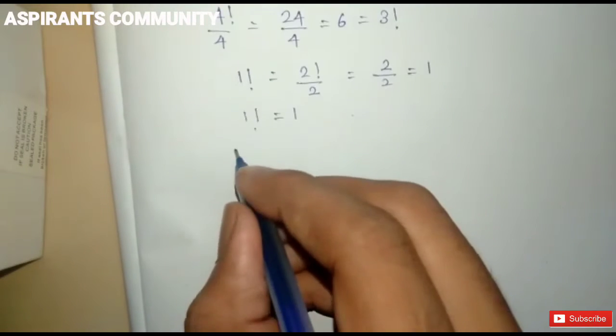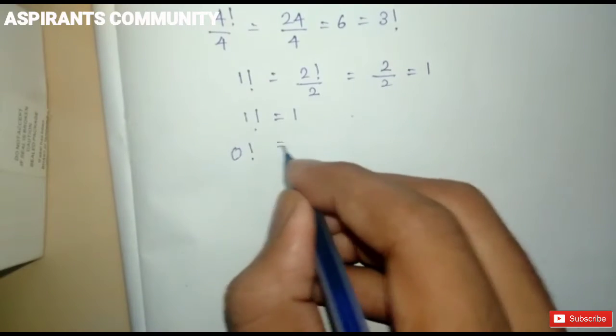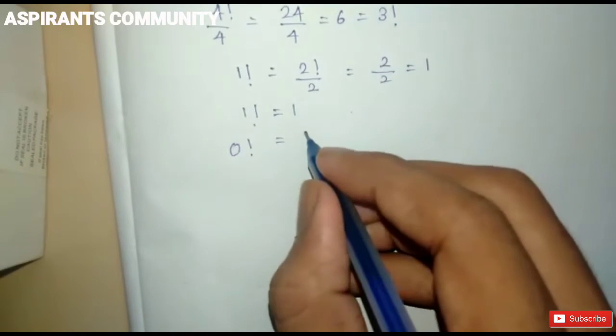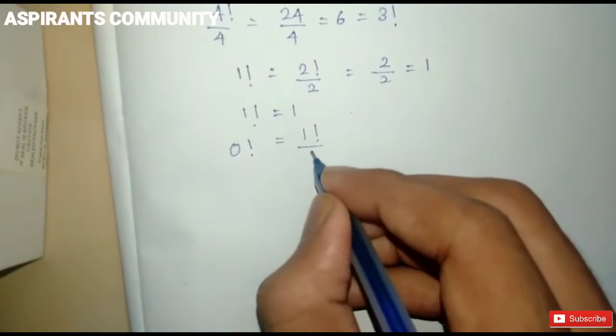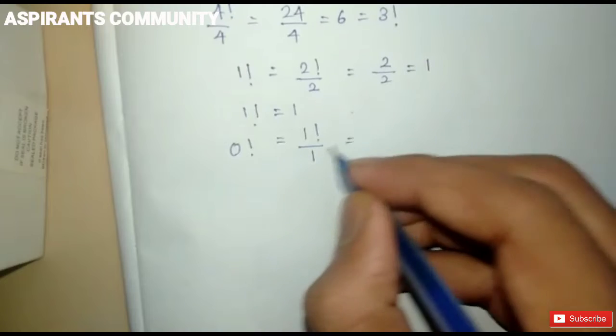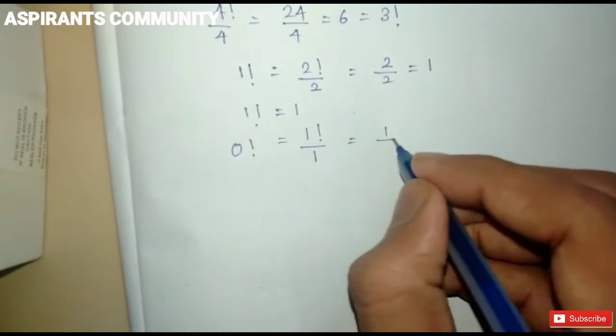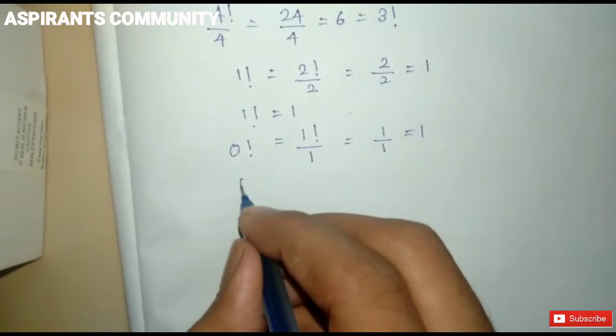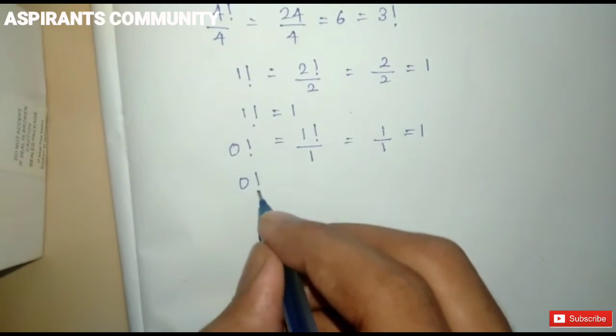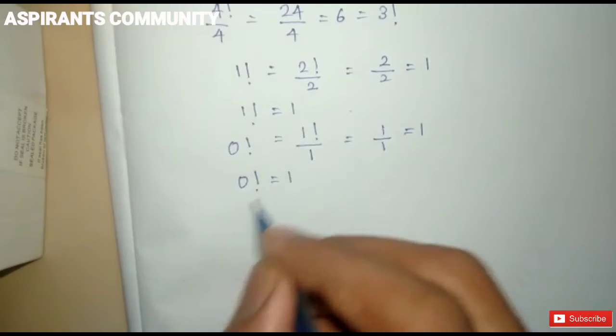So what is the value of 0 factorial? We can express it as 1 factorial divided by 1. That is 1 divided by 1 equals 1, therefore 0 factorial equals 1.